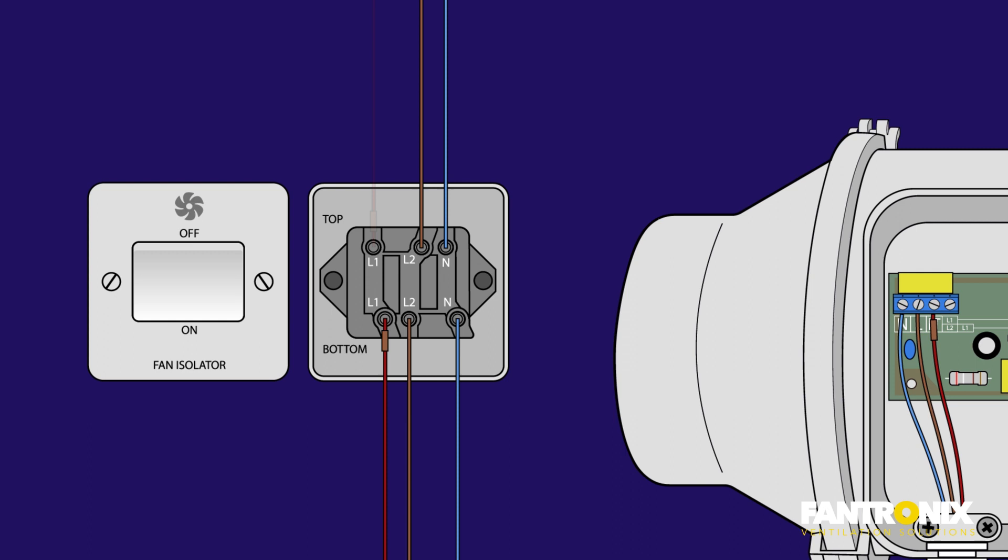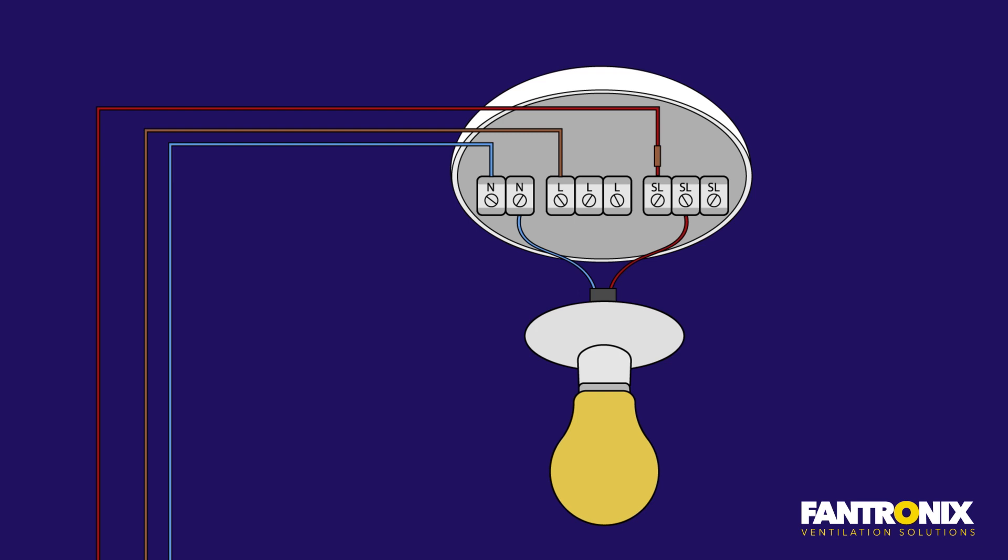The fan isolator switch in turn will come from your lighting circuit. N is neutral, L again permanent live and SL for switch live.